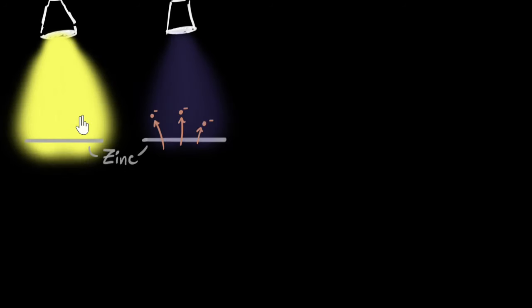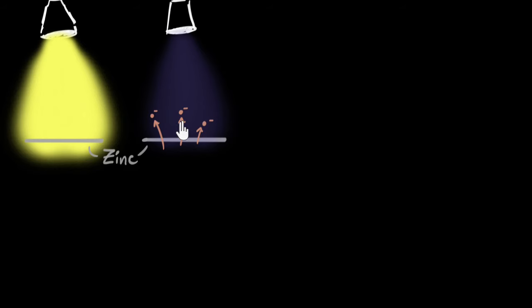Even if you shine blindingly bright visible light on the zinc metal surface, you get no photoelectric effect. And even if you shine extremely dim but ultraviolet light, you get photoelectric effect.